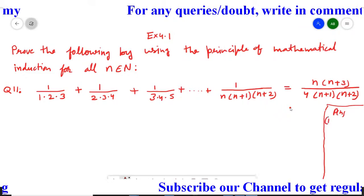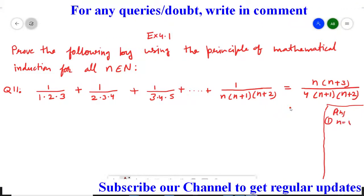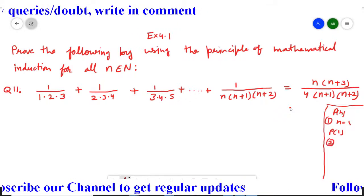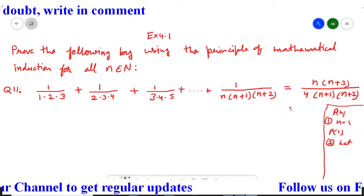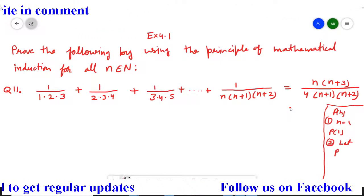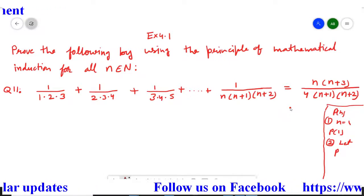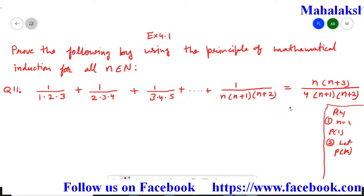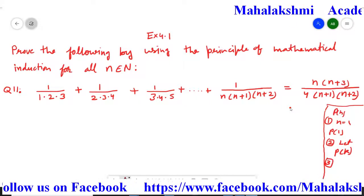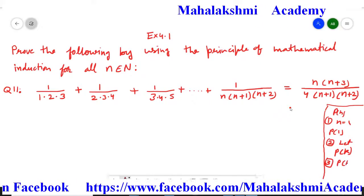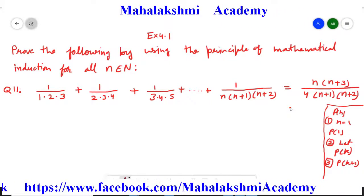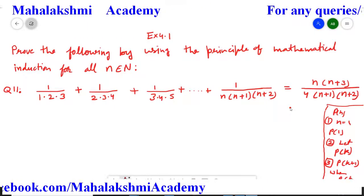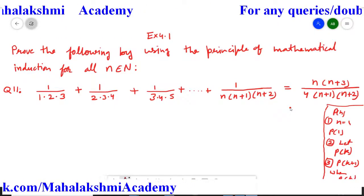In the first step, for n equal to 1, we have to prove that P1 is true. In the second step, we assume that for n equal to k, the statement Pk is true. And in the third step, we have to prove that Pk+1 is true when statement Pk is true.